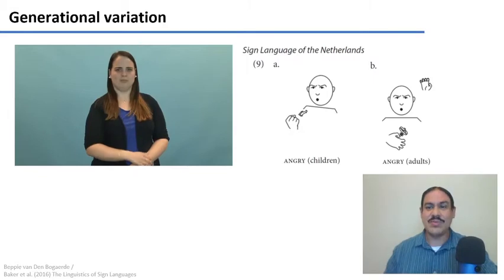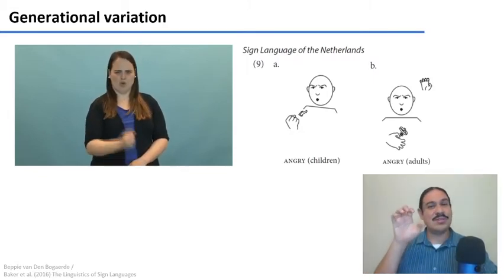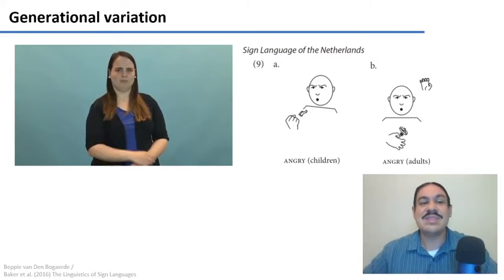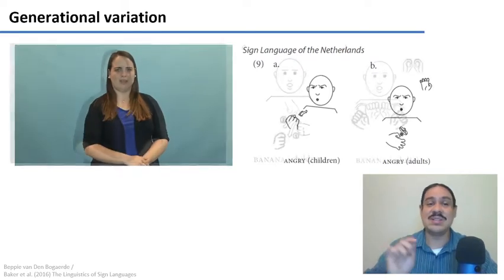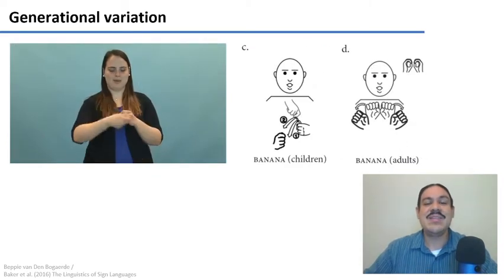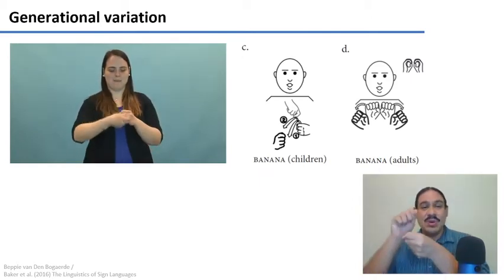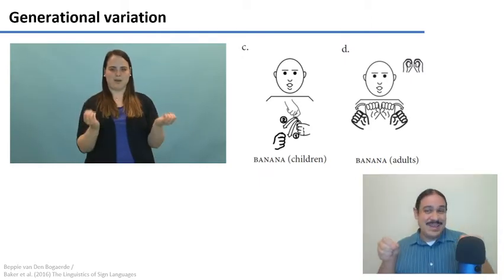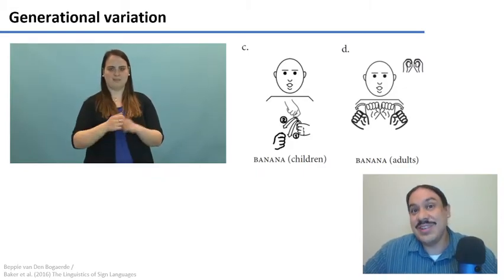The sign for children and the one for adults involves different positions of the fingers and different motions. Here's another example: there's a word for children for 'banana' and a word for adults for 'banana.' The word for children is more iconic and appealing, while the word for adults is something like a breaking up of a banana. They are both different and they are used by different generations.